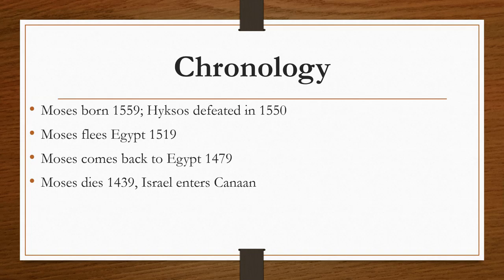We looked at when Joseph was born and all that stuff last week. I mentioned the Hyksos. Israel was divided between north and south. The Hyksos were invaders — not native Egyptians, came in from somewhere in the Turkey area. Most historians believe they came in gradually and seized power. They were defeated in 1550 by Pharaoh Ahmose from southern Egypt. So Moses was born in 1559 — nine years before the Hyksos fell. That's going to be important.